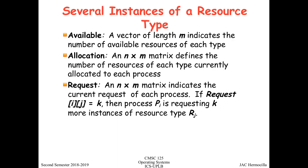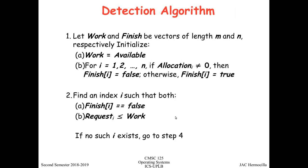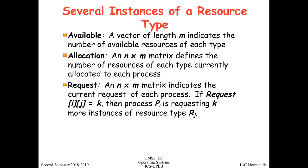For several instances of a resource type, the mechanism is similar to the Banker's Algorithm. You have the vector 'available', the matrix 'allocation', and a 'request' matrix. The request matrix (n processes × m resources) indicates the current request of each process: if Request[i][j] = k, then process i is requesting k more instances of resource type Rj. This algorithm applies when resource types have more than one instance.